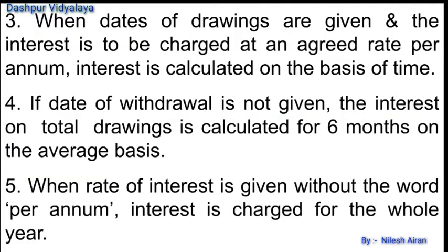When the date of drawings is given, interest is charged at the agreed rate per annum based on time. If the date of withdrawal is not given, interest on drawings is calculated only for a period of 6 months. For example, if a partner withdrew rupees 10,000 but no withdrawal date is given, interest is charged only for 6 months on an average basis.